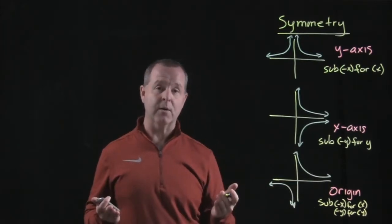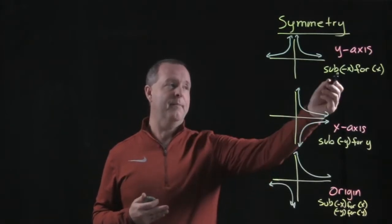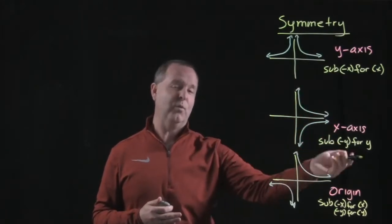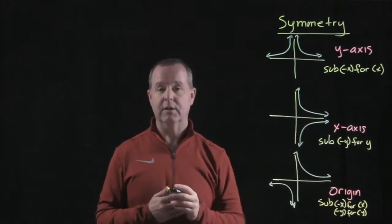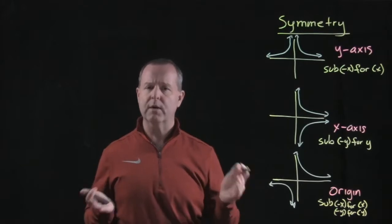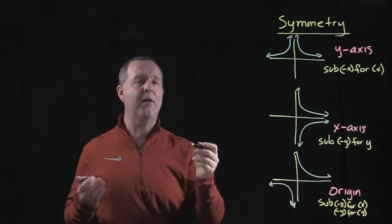And how we test those depends on what we're going to substitute in. For example, we can substitute a negative x in to figure out symmetry for a y-axis. Reverse that, we'll substitute a negative y into the equation to look for symmetry on the x-axis, and the origin we're going to do both. So let me give you an example to see how this works out.